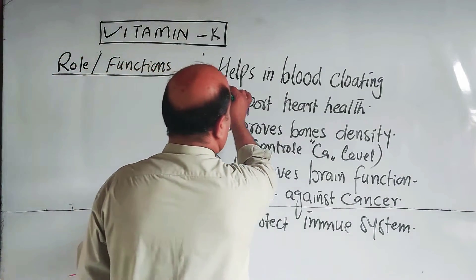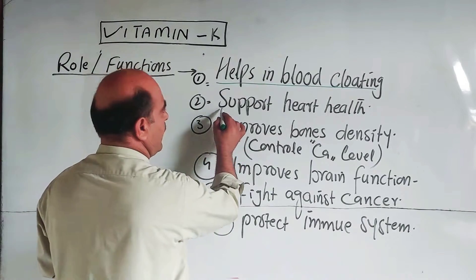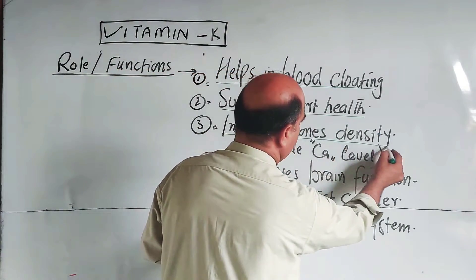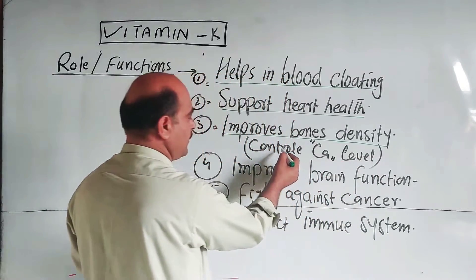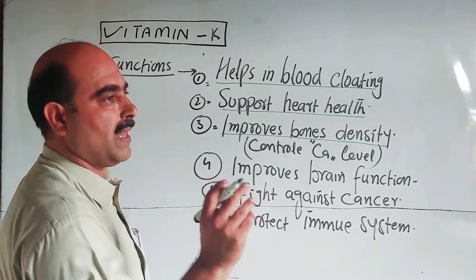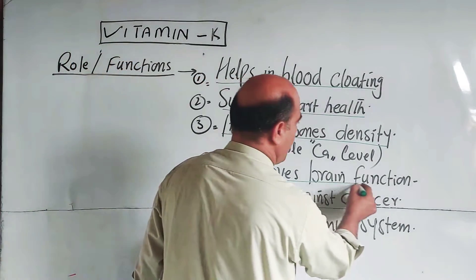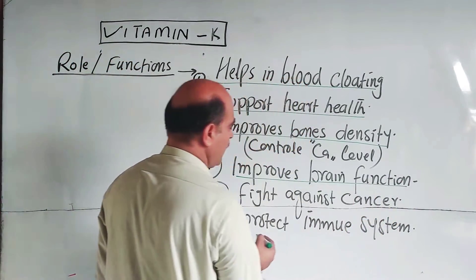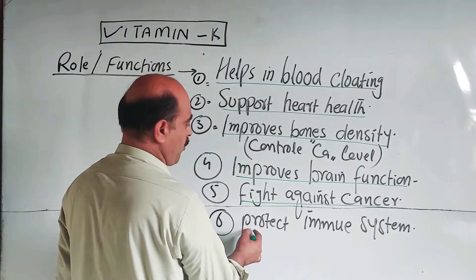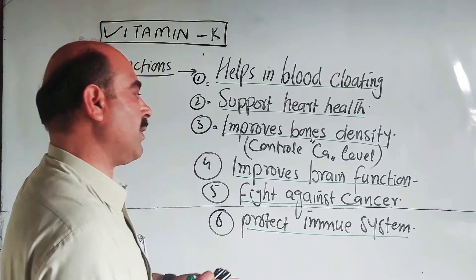To summarize the functions: first, it helps in blood clotting; second, it supports heart health; third, it improves bone density by absorbing calcium and controls the calcium level in the blood; fourth, it improves brain function; fifth, it fights against cancer; sixth, it protects the immune system. These are the various functions of Vitamin K.